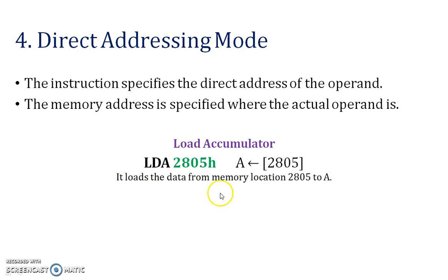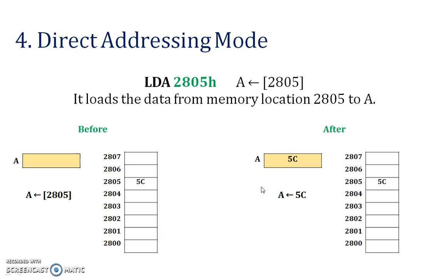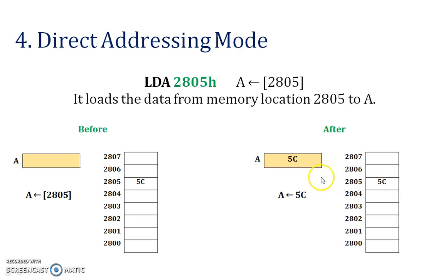Next — direct addressing mode. In direct addressing mode, the address is directly stored in the register. Here you can see that A is the accumulator and 2805 is the address. The value at address 2805 is 5C, so 5C is stored in the accumulator. Therefore 2805 is our effective address.